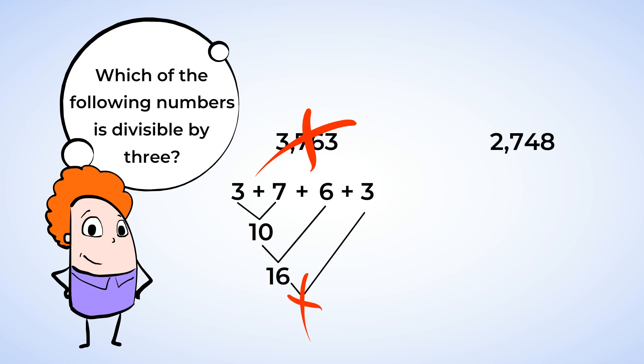Well, the next number is 2748. Let's add up those digits. 2 plus 7 is 9. 9 plus 4 is 13. 13 plus 8 is 21. Is that a multiple of 3? Yes. And that means 2748 is also divisible by 3.